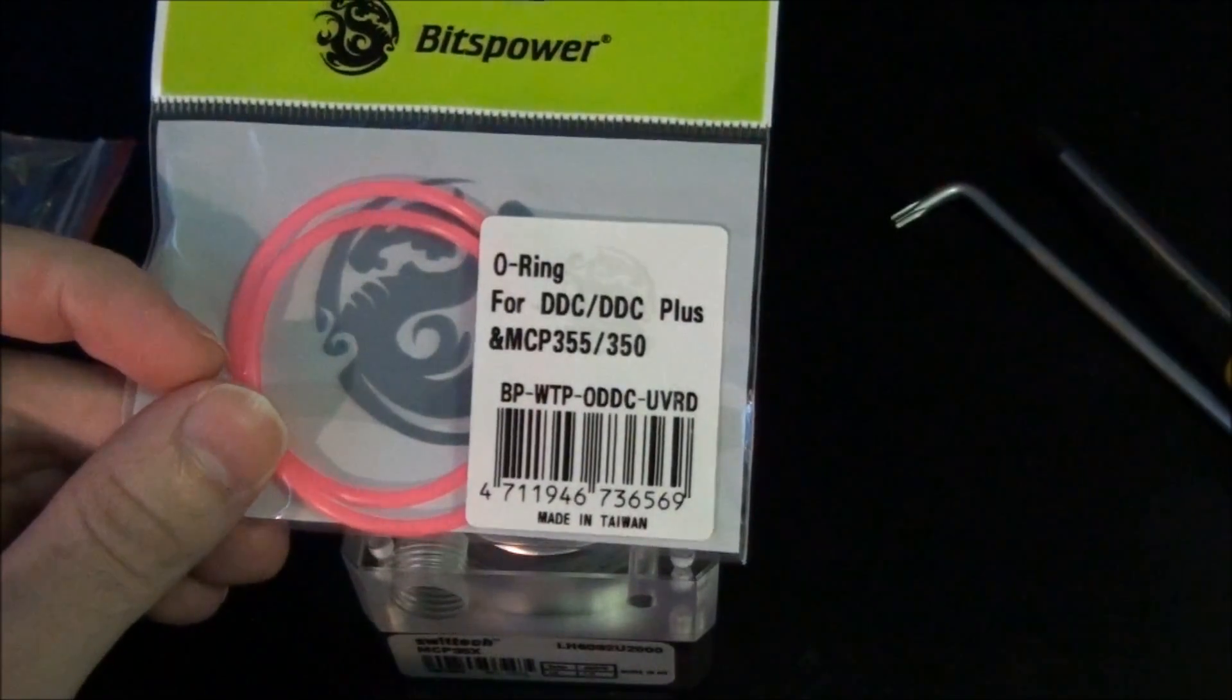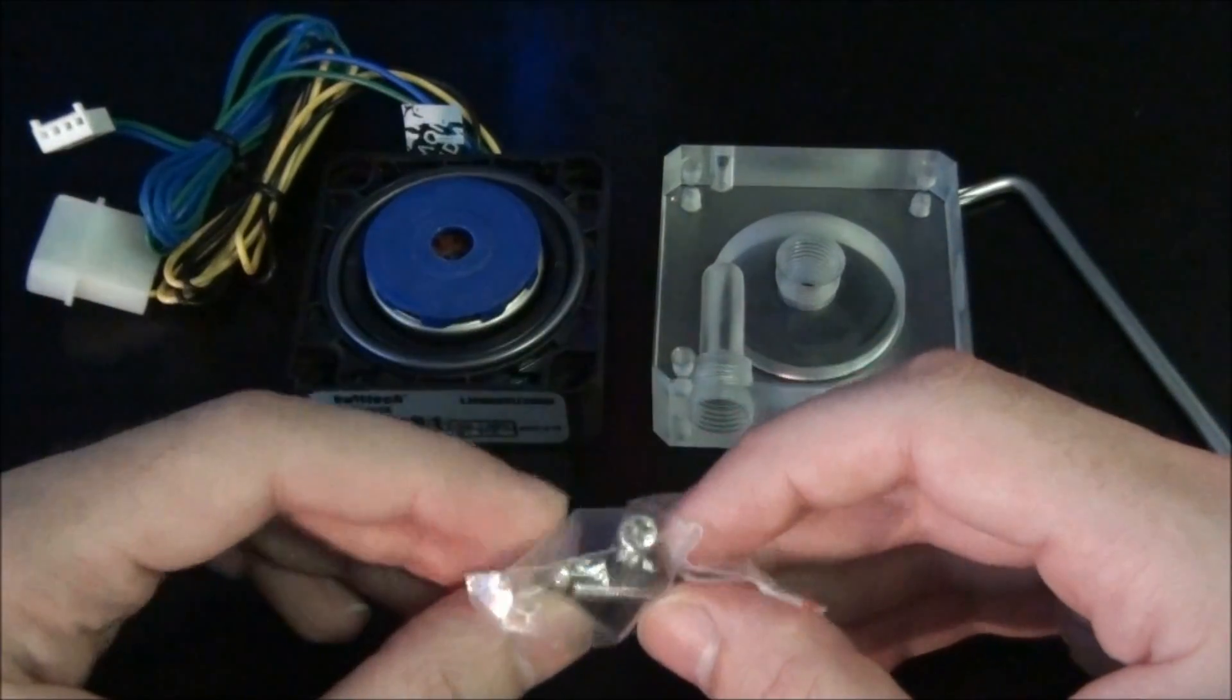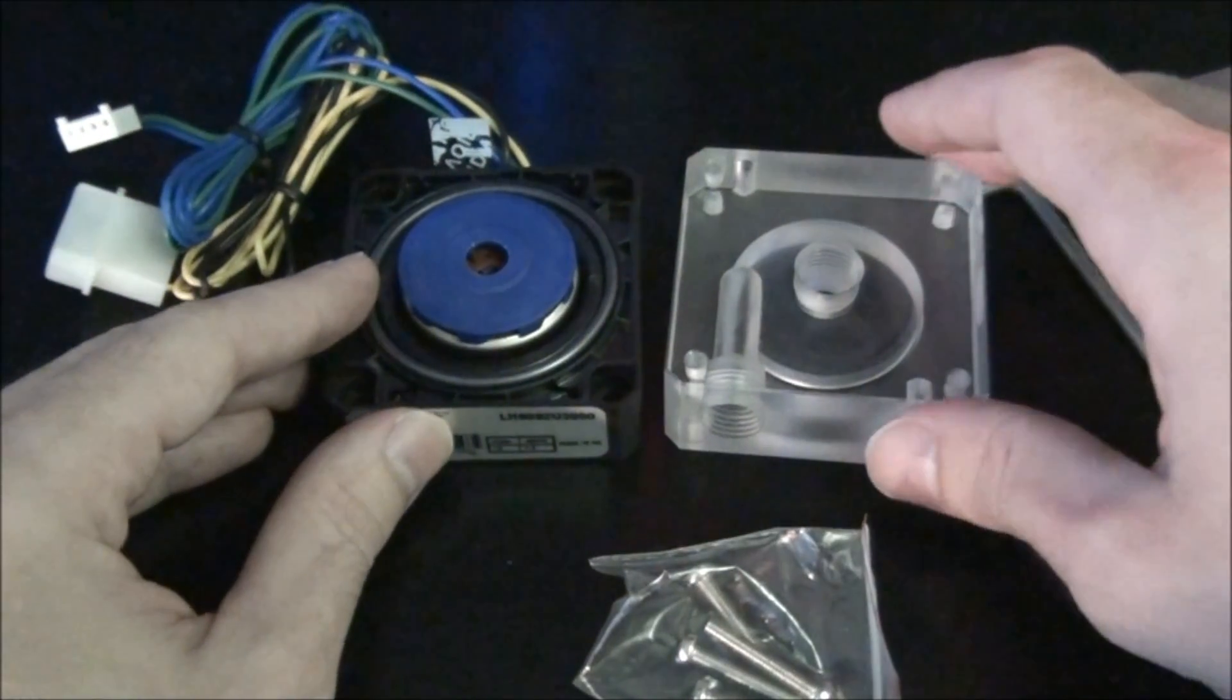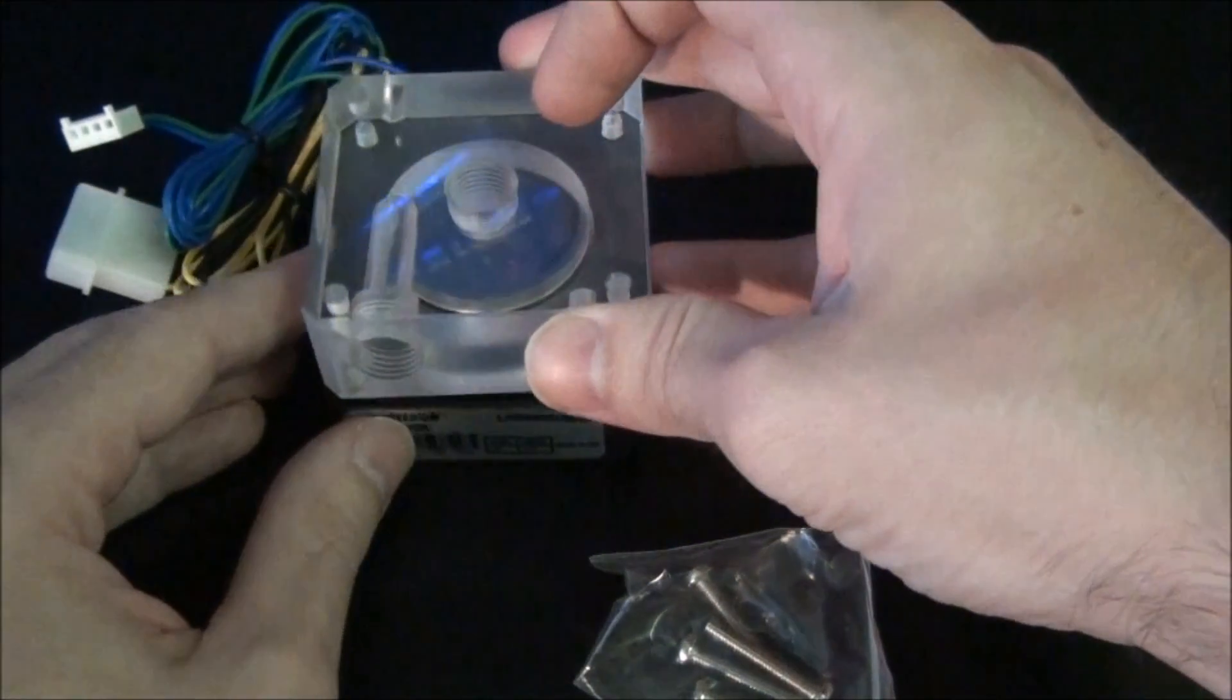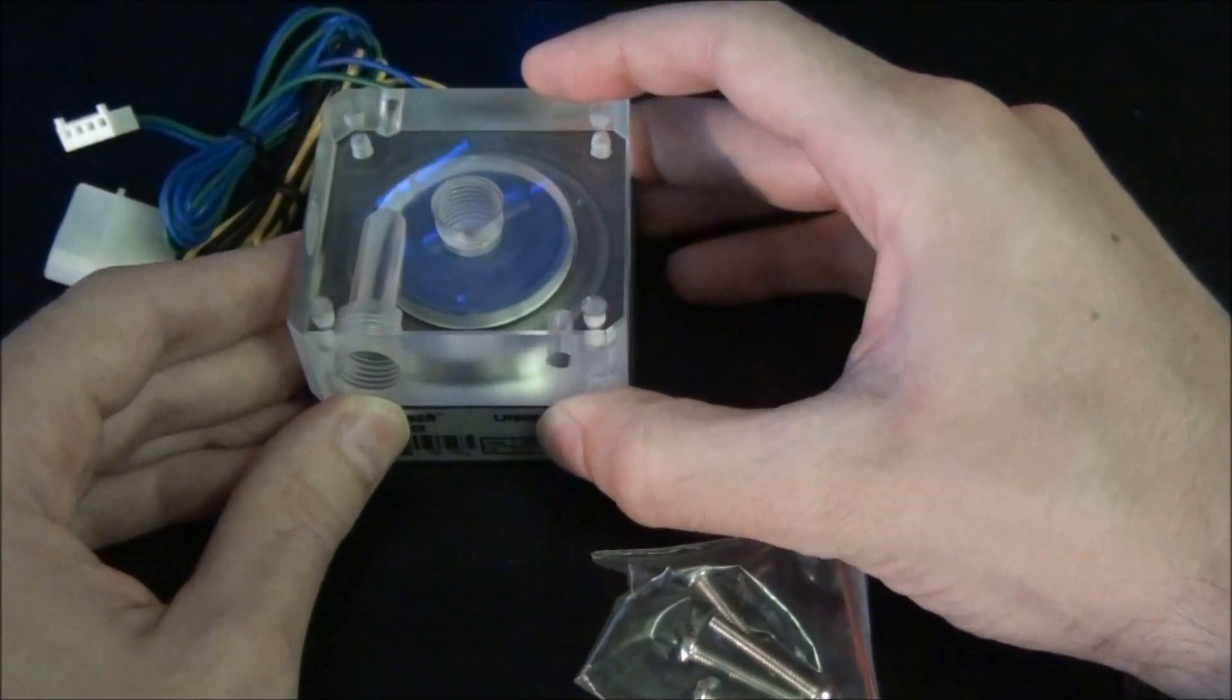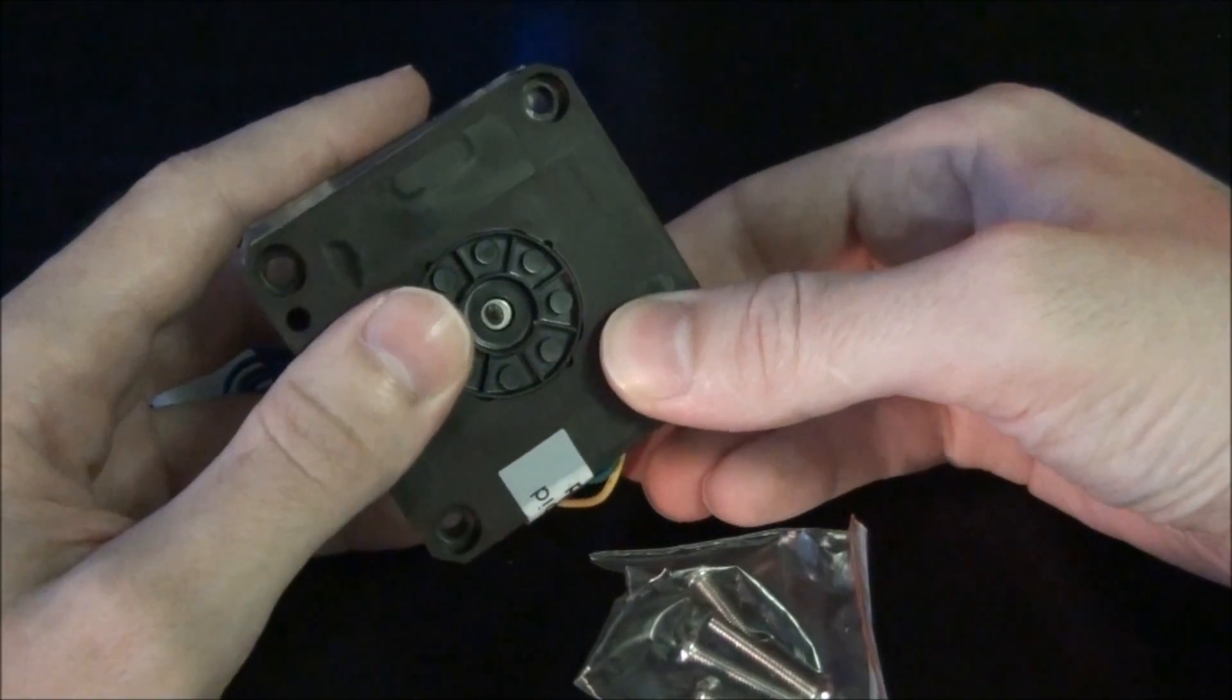So make sure the o-ring is in place correctly. And then just place your new pump top on top of the pump. Line the holes up, and then obviously just put the screws up from the bottom.